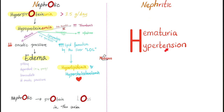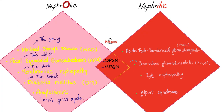The moral of the story is: if your patient has diffuse proliferative glomerulonephritis, it means number one, they have lupus; number two, they have nephrotic and nephritic, so they are losing protein and blood in the urine.